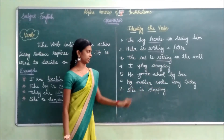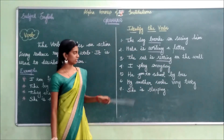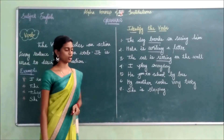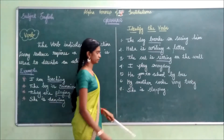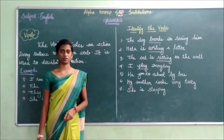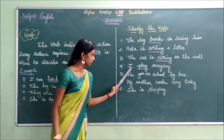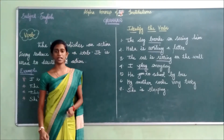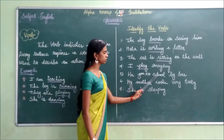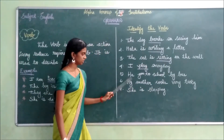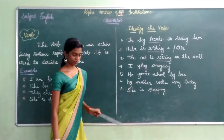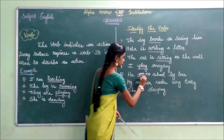I play every day. Tell me, children — what is the verb in the fourth sentence? Very good. The verb is play. What does it indicate? It indicates an action. The subject — the person is playing, it indicates the action. Fifth one: He goes to school by bus. What is the verb here? Very good. The verb is goes.